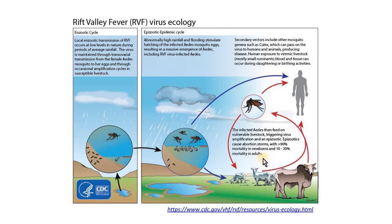The disease can also be transmitted by infected blood or air around butchered animals or aborted fetuses and fetal membranes. However, the virus cannot transmit from one human to another.